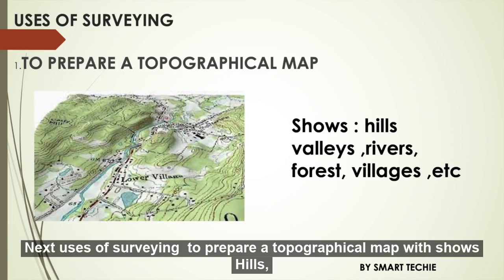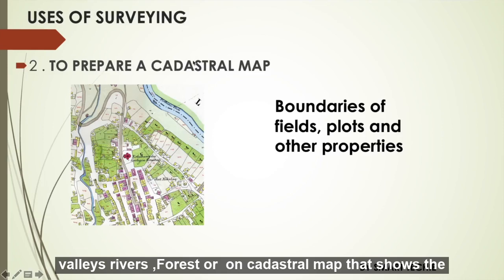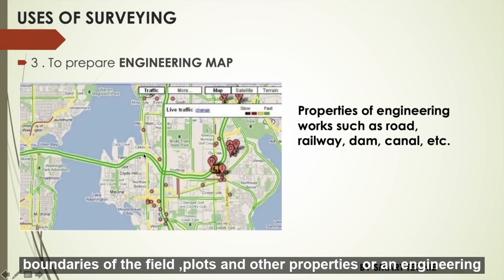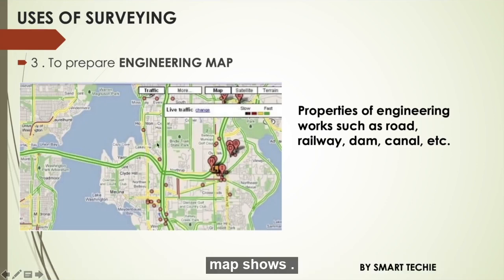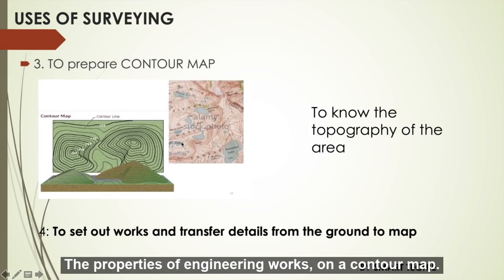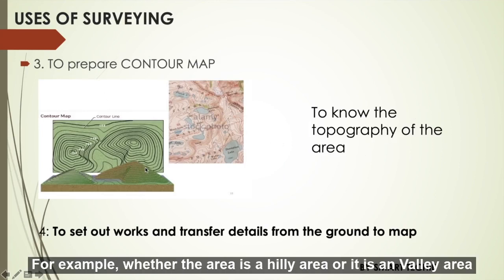Uses of surveying include: to prepare a topographical map, which shows hills, valleys, rivers, forests, etc.; a cadastral map, which shows the boundaries of field plots and other properties; an engineering map, which shows the properties of engineering works; or a contour map, which shows the topography of the area — for example, whether the area is hilly or has a valley.